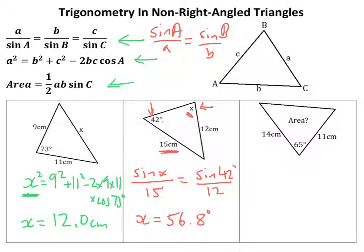Now, the area formula is pretty straightforward. Again, like the cosine rule, you want an angle with the sides that sort of make that angle. So the area is going to be equal to a half times 14 times 11 times sine of the angle, 65.